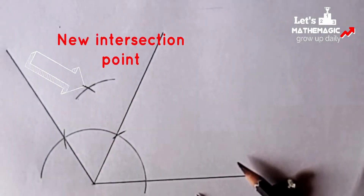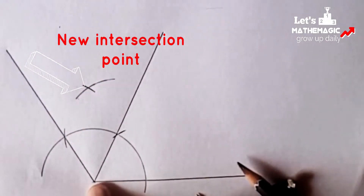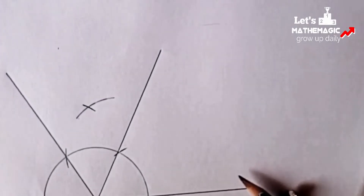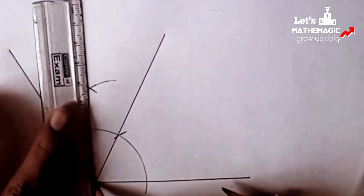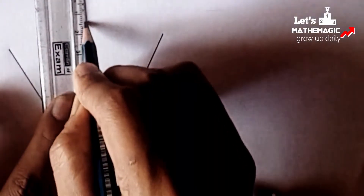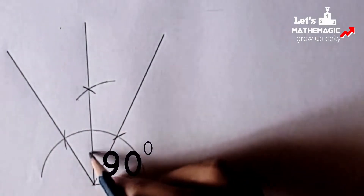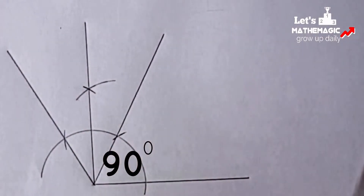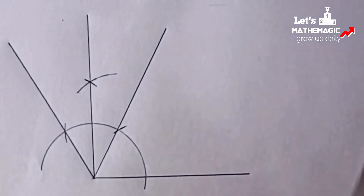With this intersection point, we will join the left boundary point of the line segment and we will get a new angle — that is 90 degrees. We have joined it. So we have got the 90 degree angle.